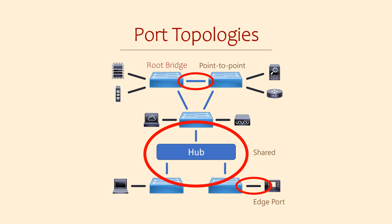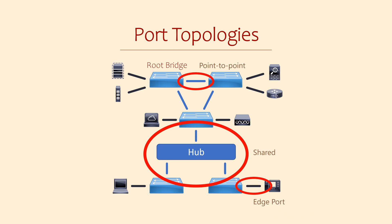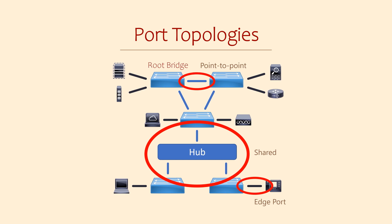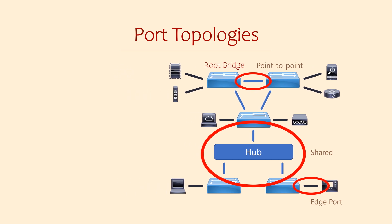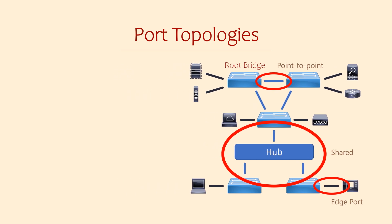Edge devices are things like PCs, printers, routers — basically anything that's not connecting switches together. This is important because spanning tree is there to stop loops, and loops occur in devices that forward layer 2 frames, so basically hubs and switches. Edge devices do not forward frames, so they do not cause loops.